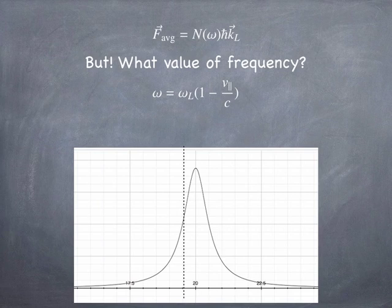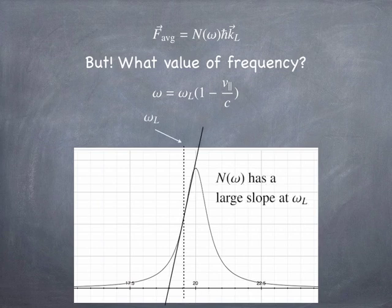If the ion is moving fast, it shifts omega to the left. That drops the force. If it's moving very slowly, or if it moves in the other direction, it'll shift omega up. And that will increase the force. So, we have a force that varies as a function of velocity. And that turns out to be the important idea.